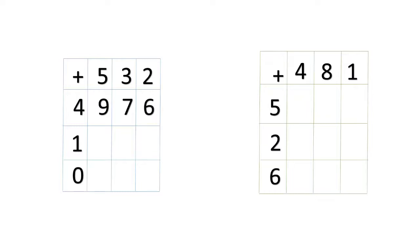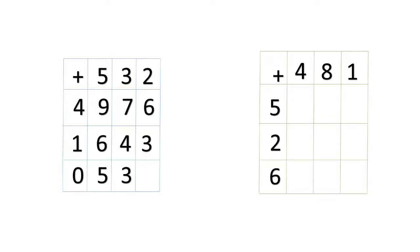We are done with the first line. We will go to the next line. Even here, we have to always start with the first number on the top, that is number five. Five plus one is six. Then three plus one is four. Two plus one is three. Five plus zero is five. Three plus zero is three. Two plus zero is two.